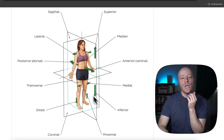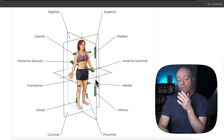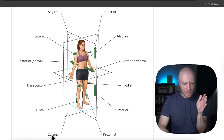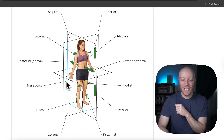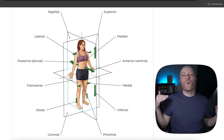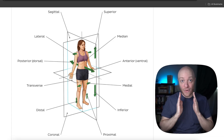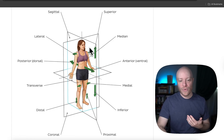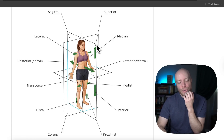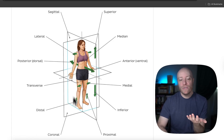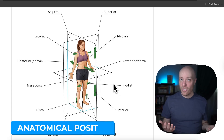You're also seeing anatomical planes. We have the sagittal plane, the coronal plane, and the transverse plane. These are anatomical planes that correspond with three directions of space — forward/backward, left/right, and up/down. Our focus is going to be on lateral and medial, and you can see this individual is in anatomical position.